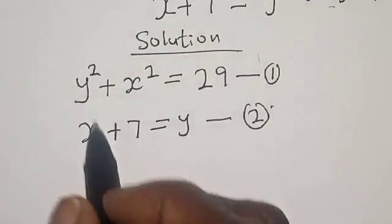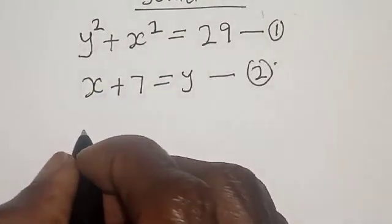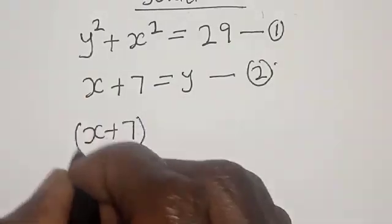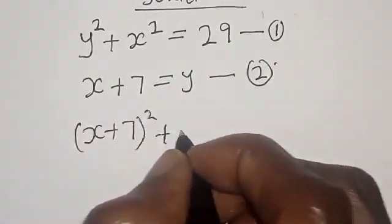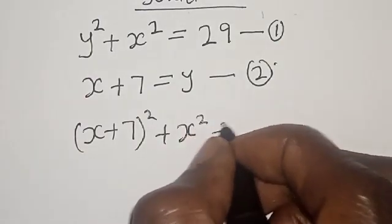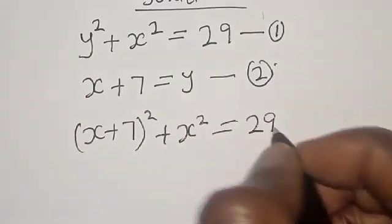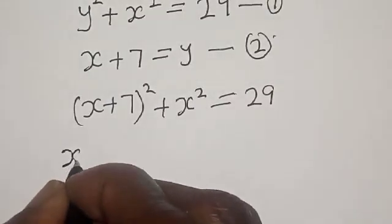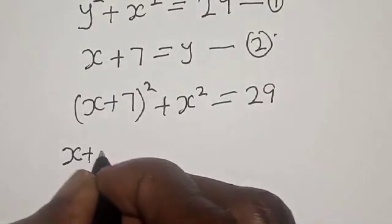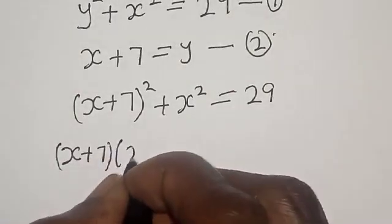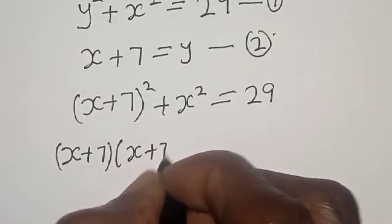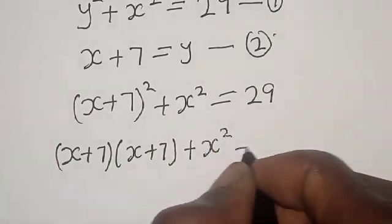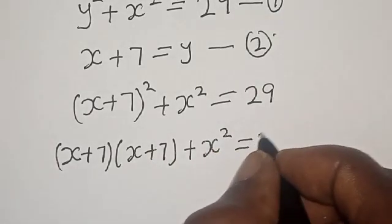Wherever we see y, we put x plus 7 there. Now we have: (x plus 7) squared plus x squared is equal to 29. This is the same as (x plus 7) multiplied by (x plus 7), plus x squared, is equal to 29.